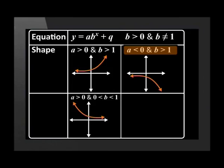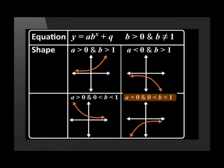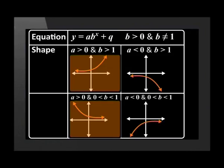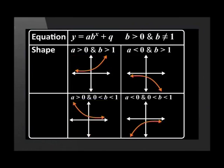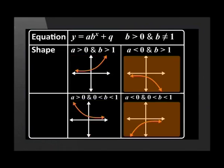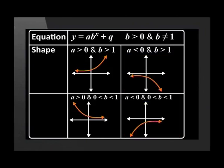If a is less than 0 and b is greater than 1, then the graph is a decreasing function and lies below the asymptote. If a is less than 0 and b lies between 0 and 1, then the graph will be an increasing function and lie below the asymptote. Notice that when a is positive the graph lies above the asymptote, and when a is negative the graph lies below the asymptote. When b is more than 1, the graph curves away from the asymptote, and when b is between 0 and 1, it curves towards the asymptote.